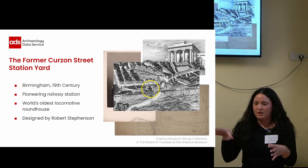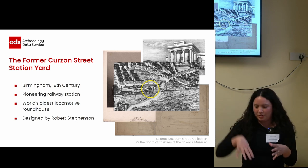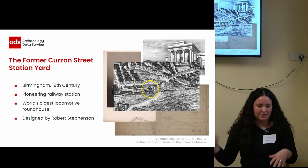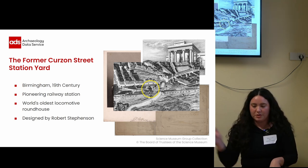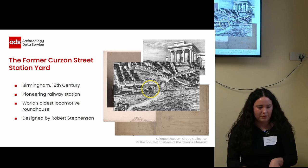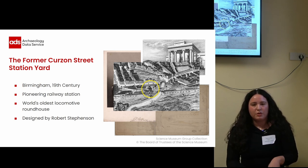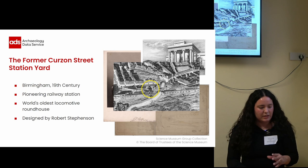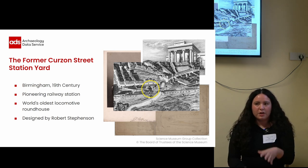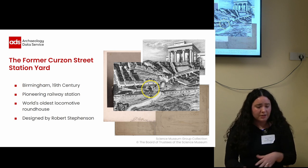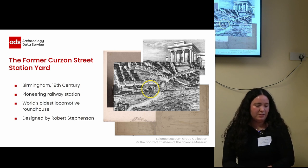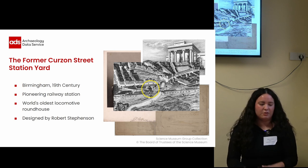Inside the Roundhouse, there was a turntable that turned around the engines so they could go on their return journey through the rail line. And it also served as a storage and maintenance facility for the locomotives. And we're talking about a significant artifact from Britain's industrial past that has great historical, social and scientific value.